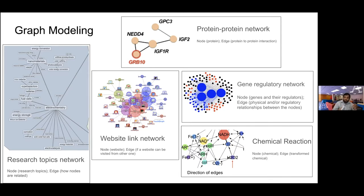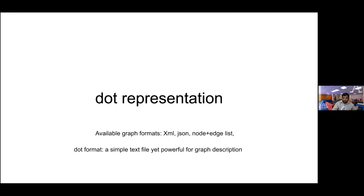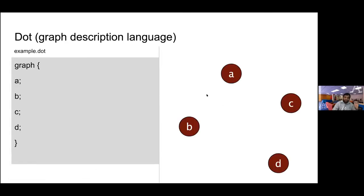Now that we have a sense of what a graph is, the question is: how do you store a graph in your computer? You can store graphs as XML files, JSON files, node lists, or even Excel. Today we'll focus on the DOT representation. A DOT file is a simple text file that is very powerful for representing, storing, and processing graph information.